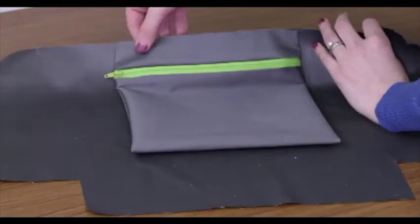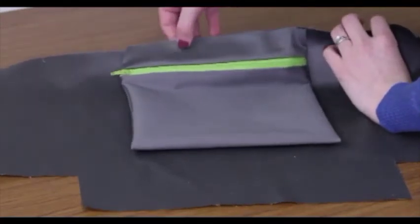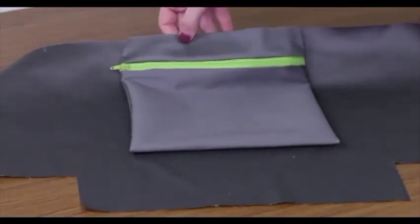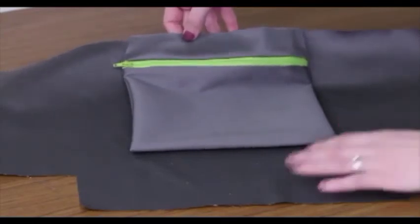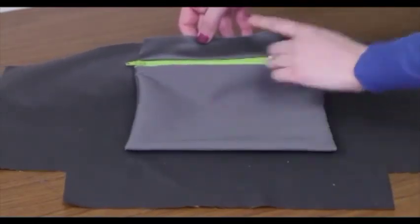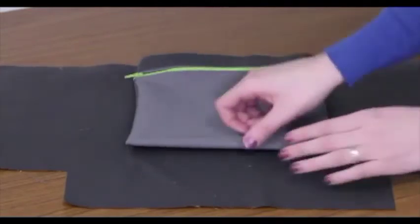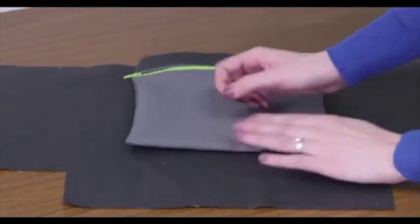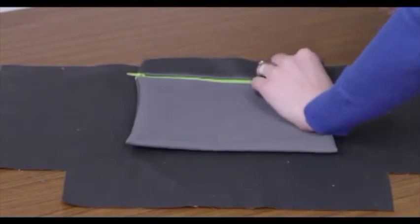We are going to be doing a basting stitch on the top here because this seam will be encompassed into the next seam so we will not see it. Go ahead and center your pocket on the inside of your bag. Right sides are together and pin along the top.